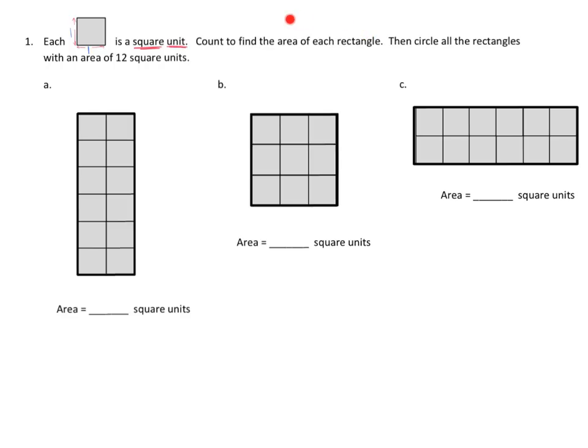And now we're supposed to count to find the area of each rectangle. So the fact that they're saying to count means our students are not expected to use some standard algorithm right now. They're just supposed to count. And then circle all the rectangles with an area of 12 square units.